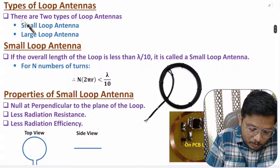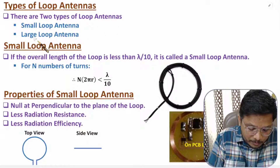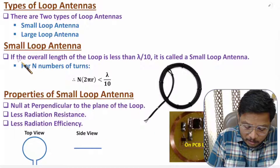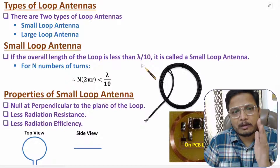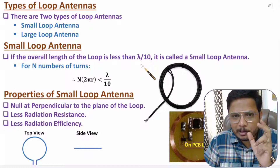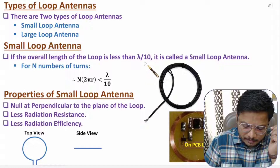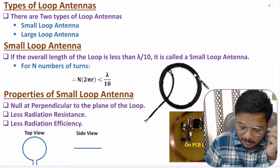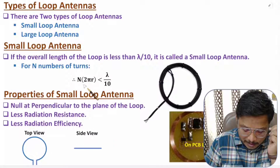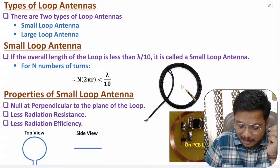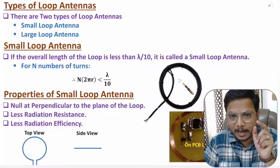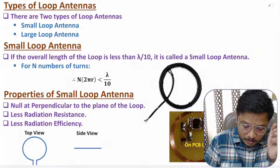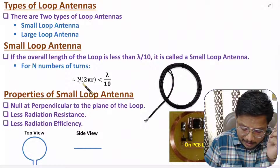Basically we have two types of loop antennas: small loop and large loop. With a small loop antenna, the length of the loop is lower than lambda by 10 (λ/10). If you have N number of turns, the total length will be N × 2πr, where r is the radius and 2πr is the circumference of one circle. That total length should be lower than λ/10.